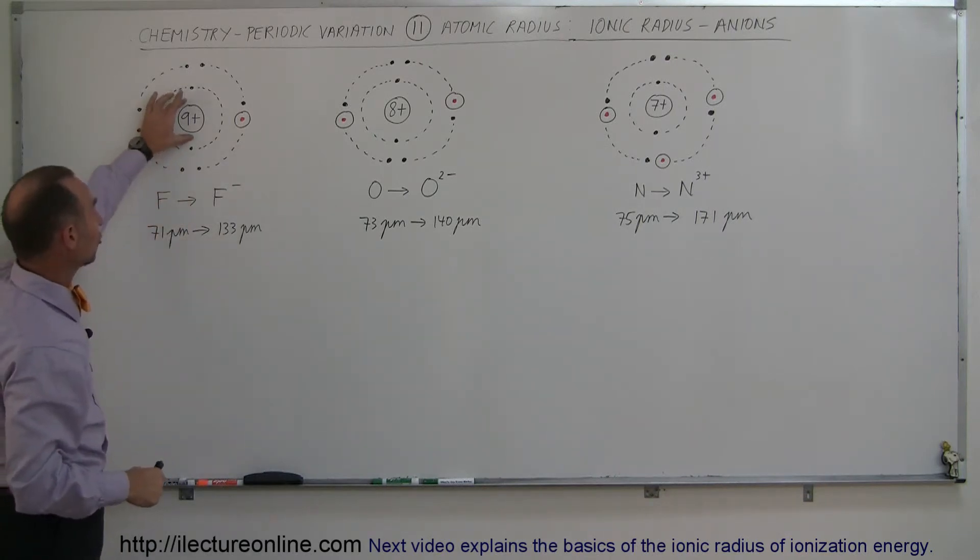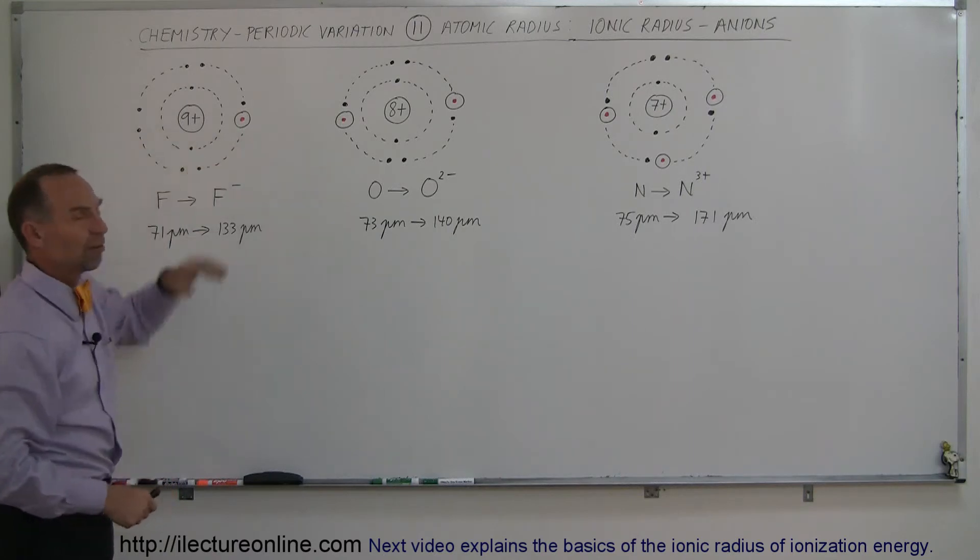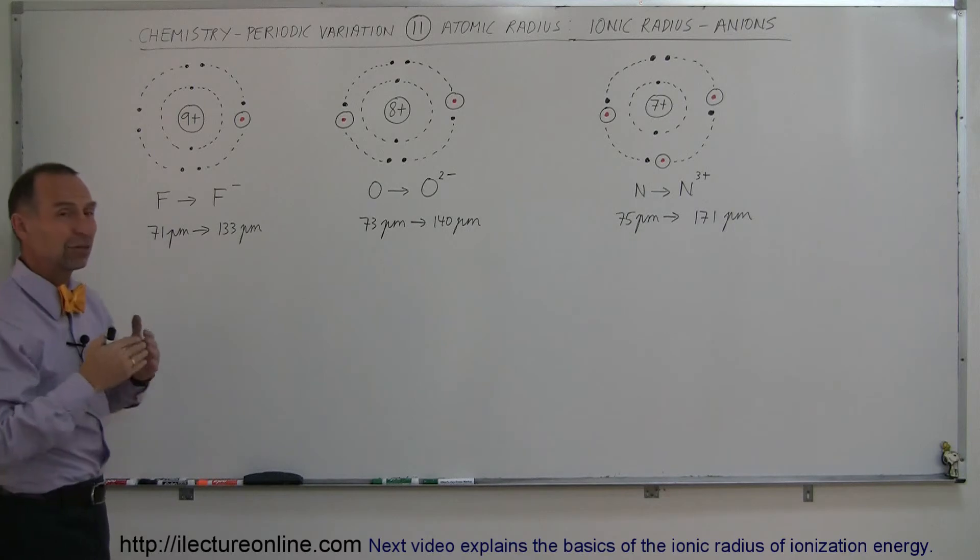Now the nuclear charge is the same. The screening effect of the innermost two electrons is the same. We just have one additional electron in the orbits around the nucleus, and so therefore there's additional repulsive forces between the electrons. They need more elbow room, so to speak.